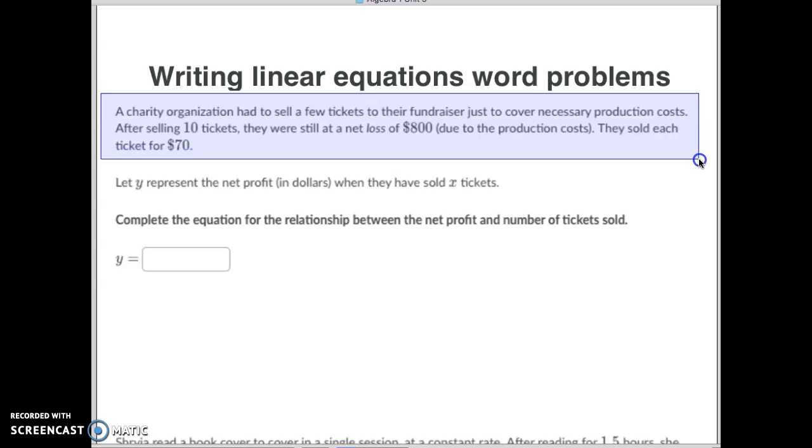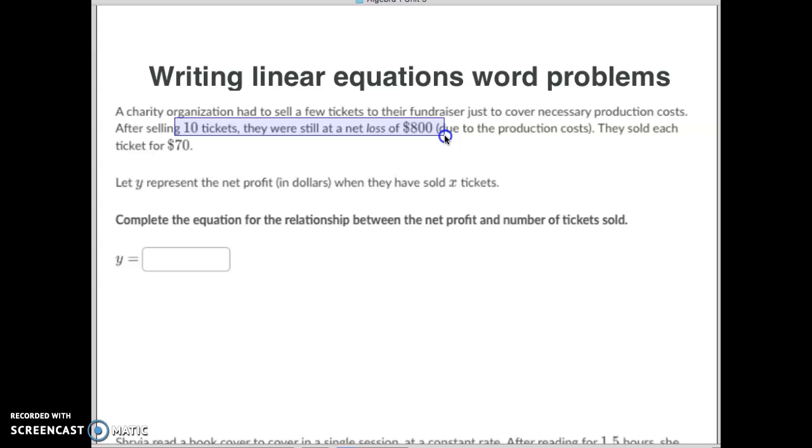So as we read this one, a charity organization had to sell a few tickets to their fundraiser to cover the necessary production costs. After selling 10 tickets, they still had a net loss of $800 due to the production costs. They sold each ticket for $70. So they've given you two pieces of information here. Number one, they've given you a coordinate point right here. After 10 tickets, they were still at a net loss of $800.